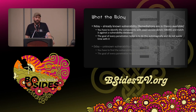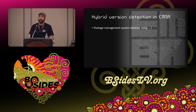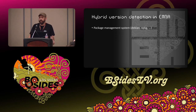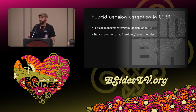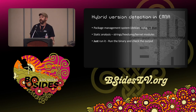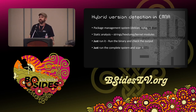The goal for every penetration tester is not to do this manually — it should happen automatically in the background. EMBA has a hybrid approach for this. First, we try to analyze the package management system if available on the firmware. We then use static analysis — doing strings on every binary, hex dumps, querying kernel modules for the exact kernel version. Additionally, we try to run every binary in an emulated environment, and also try to run the whole firmware in an emulated environment.